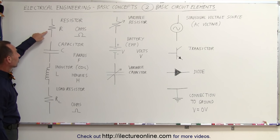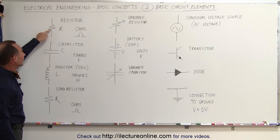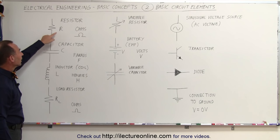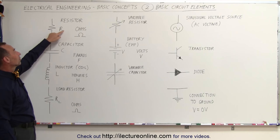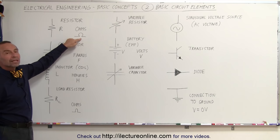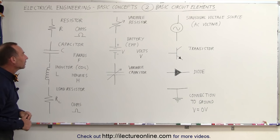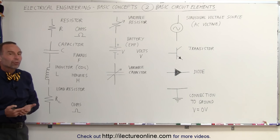Here we have a resistor. A resistor is simply a squiggly line going back and forth like that. The symbol that we use for resistance is R, and the units we have for resistance is ohms. We use the Greek letter omega to indicate ohm. That's the unit of resistance.